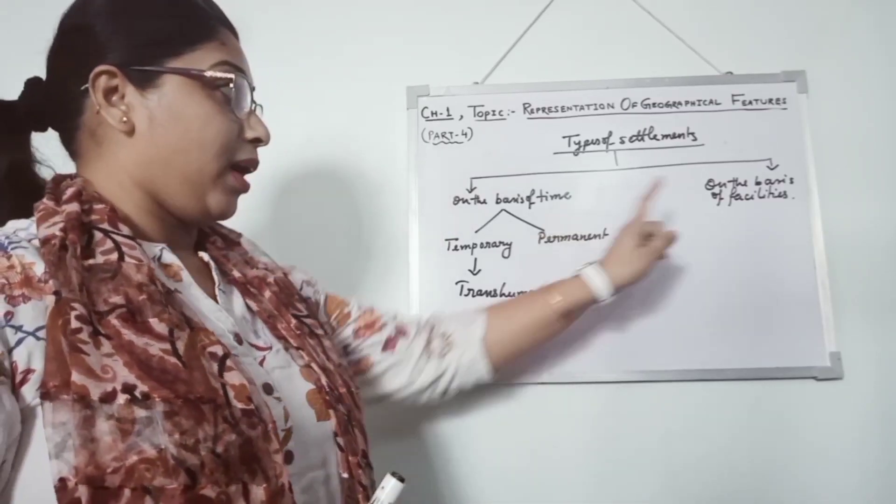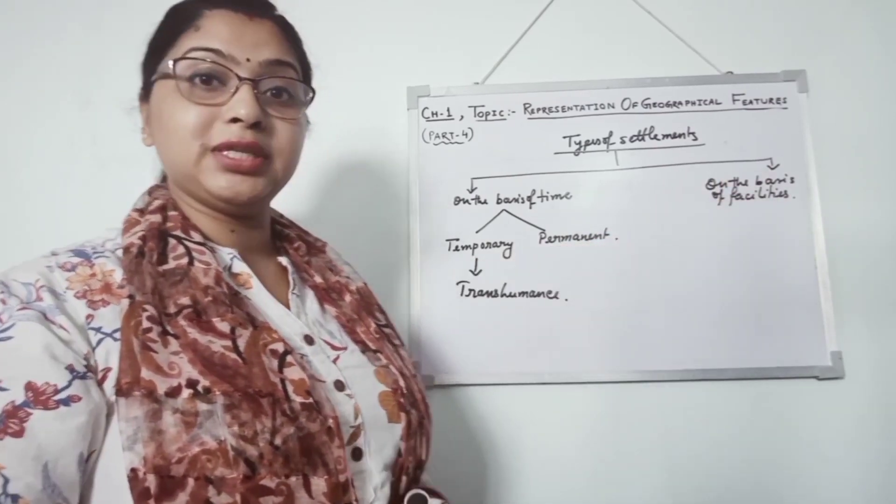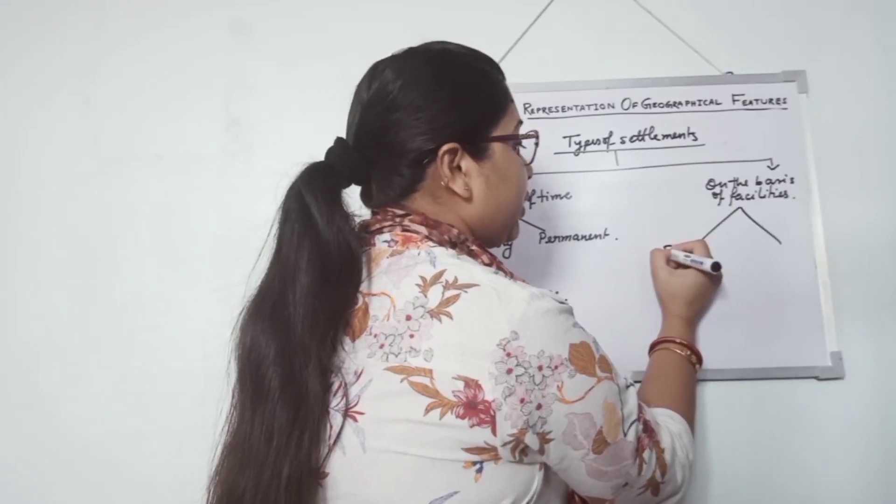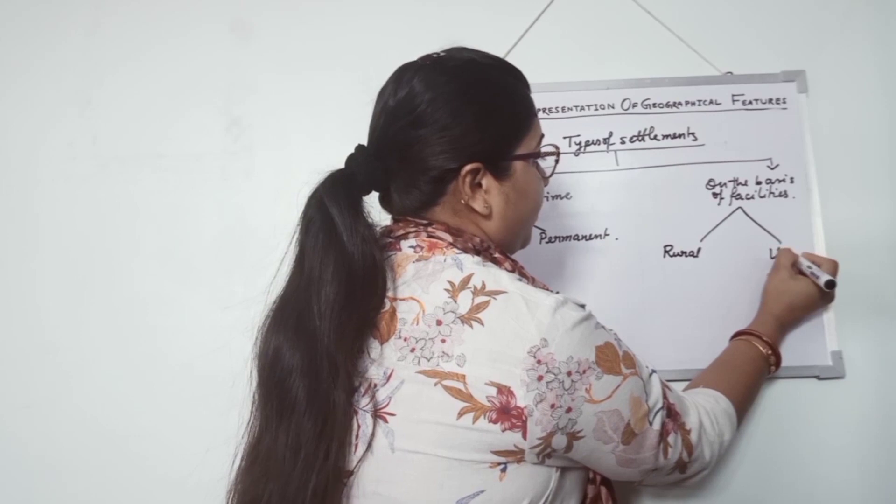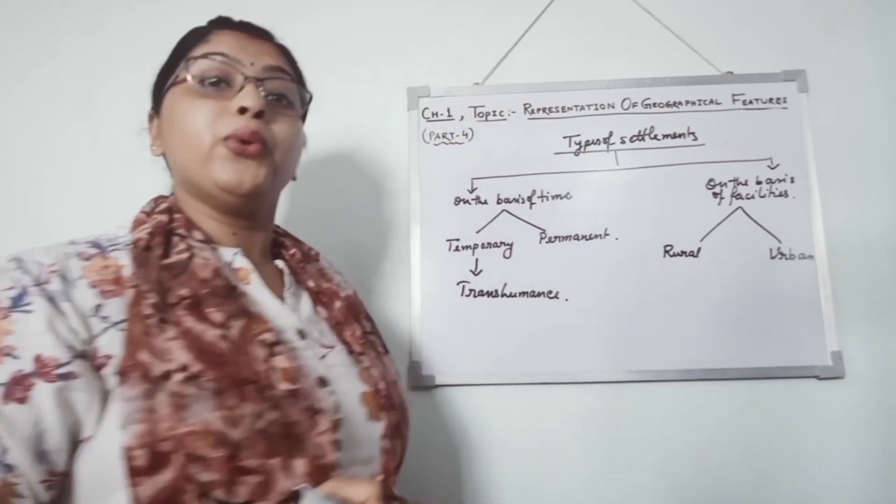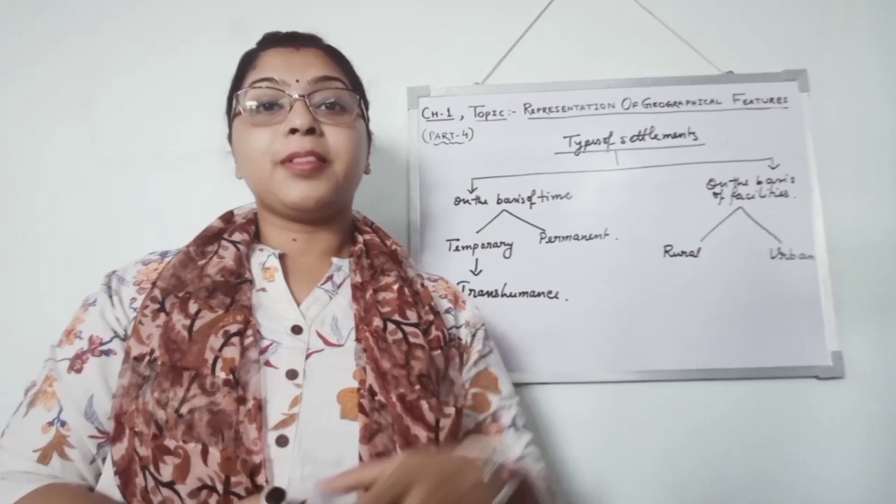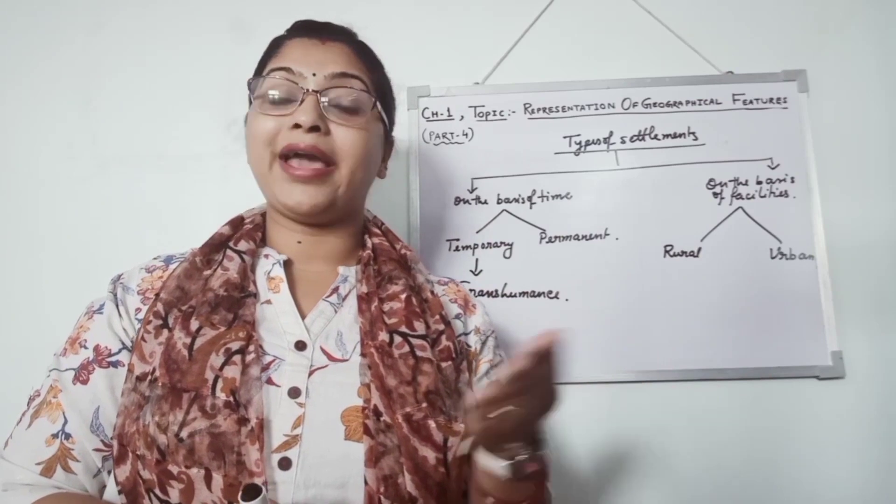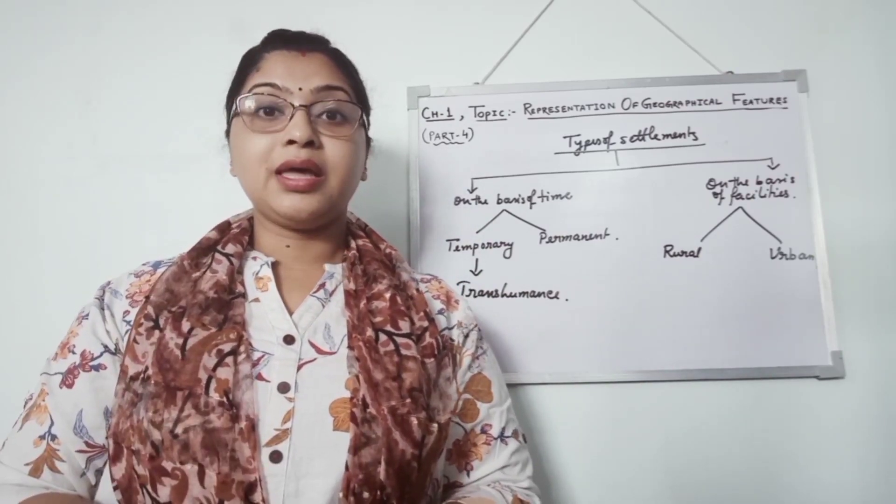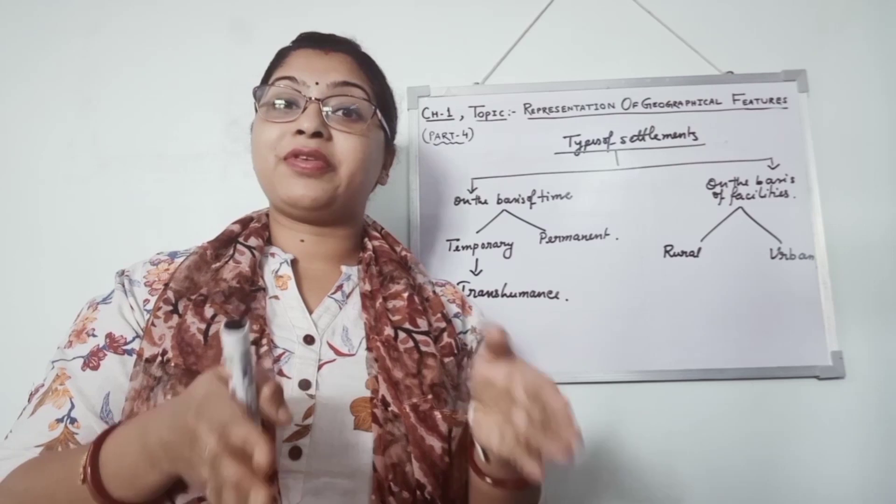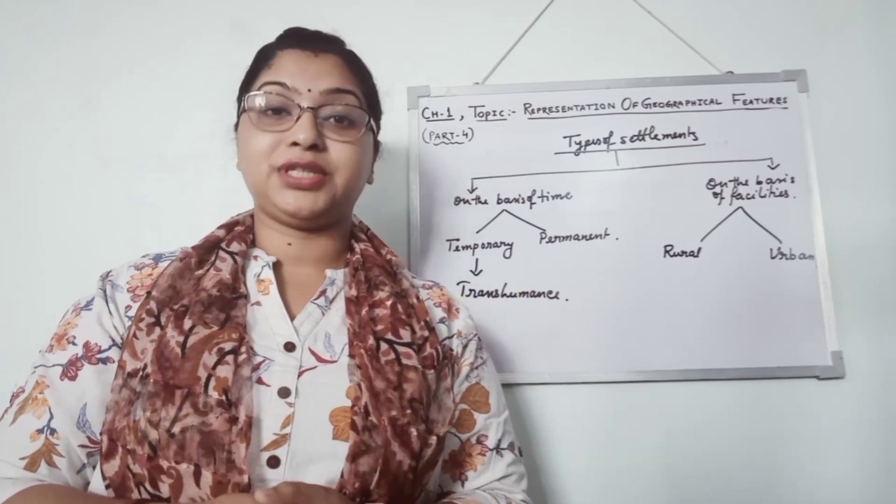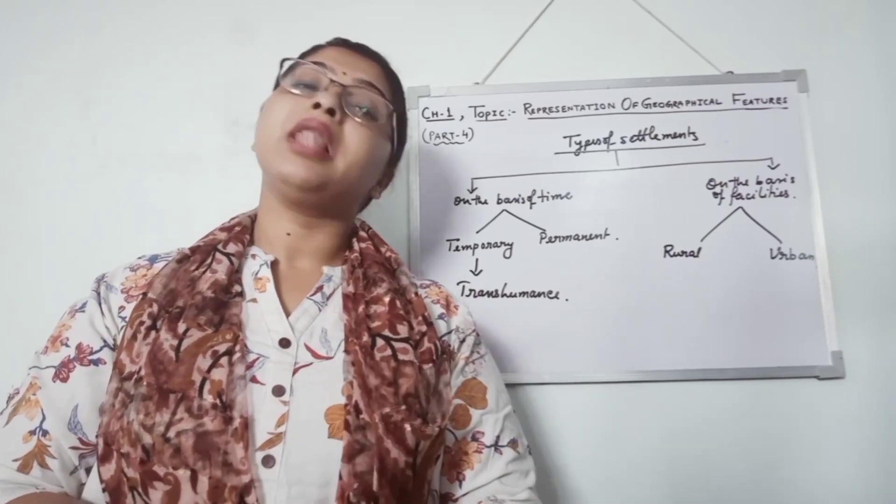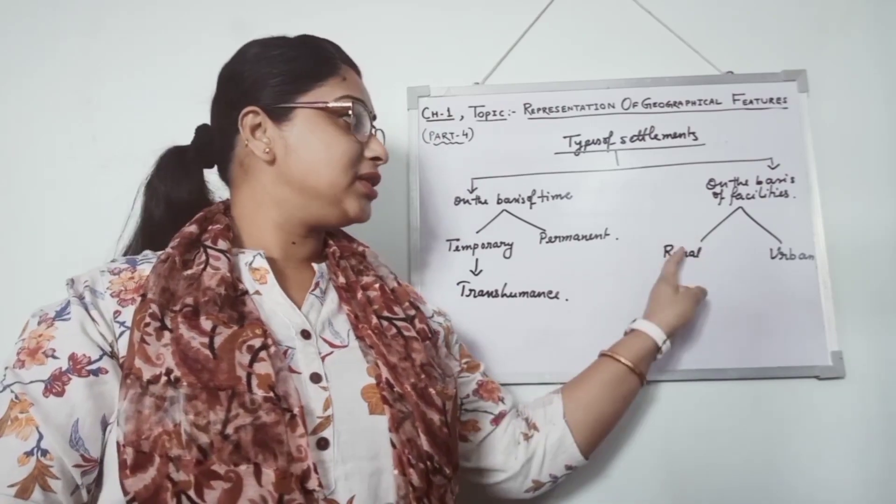Now I will tell you about on the basis of facilities. On the basis of facilities, it has been also divided into two categories. First is rural. Another is urban. Rural settlement is that, means villages, where people only engage in that fishing sector, agriculture and hunting. They are basically, they used to do the primary activities. And they are not having any kind of facilities. They used to live simple life. This is known as rural settlements.